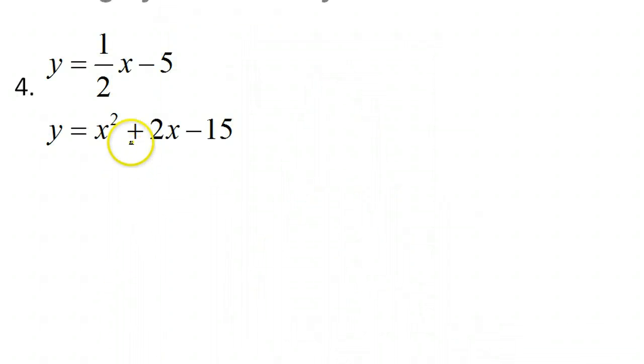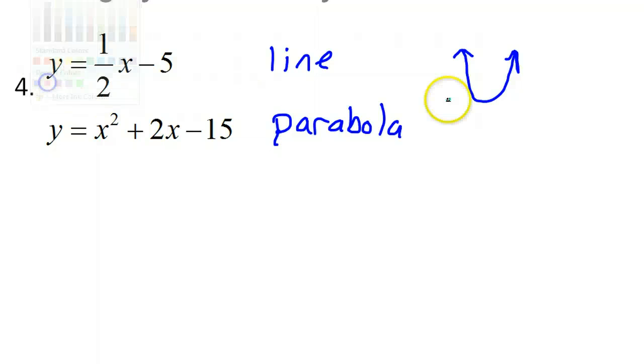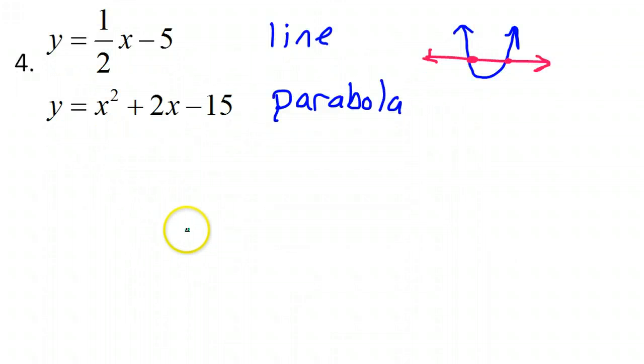Alright, let's take a look at number 4. This is linear. So, of course, that's a line. Again, this is quadratic. So, this is a parabola. So, in general, it's this type of situation that we're looking for. But we'll see when we do the details.